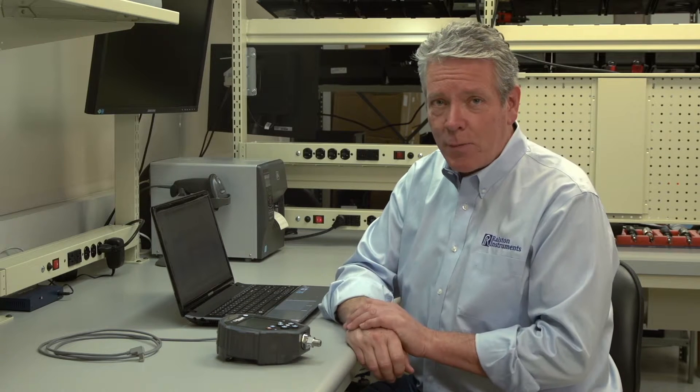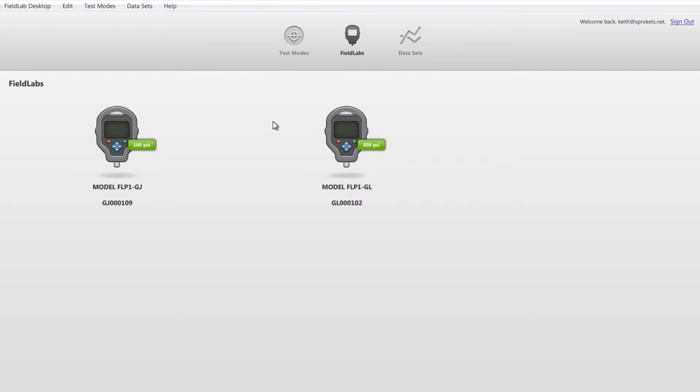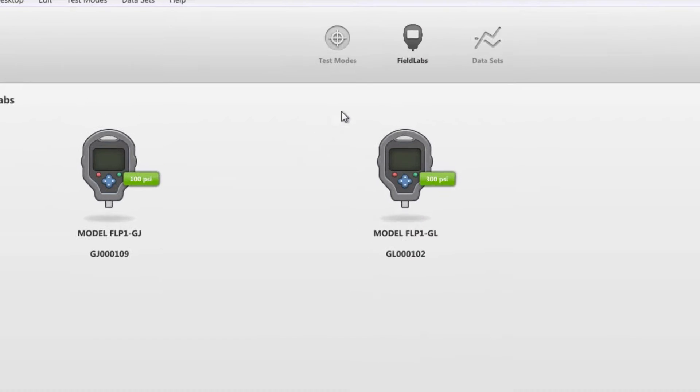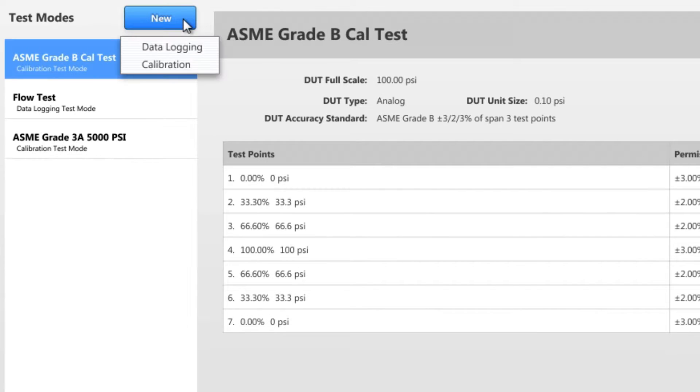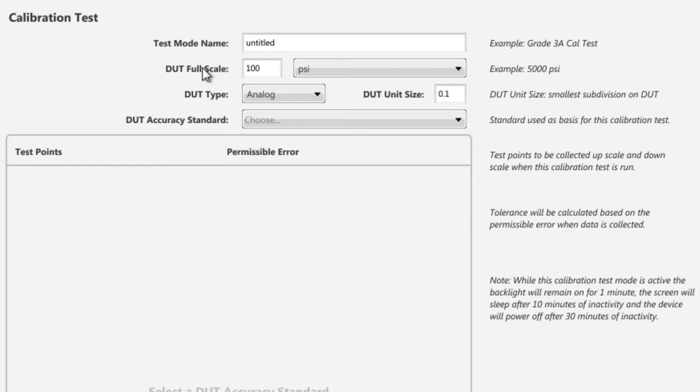So, let's create a test mode. For this example, we'll show you a calibration test. Start by selecting the Test Mode library from the main header, and select New Test Mode and Calibration from the drop-down menu.